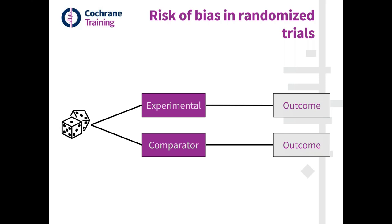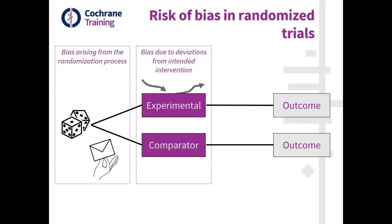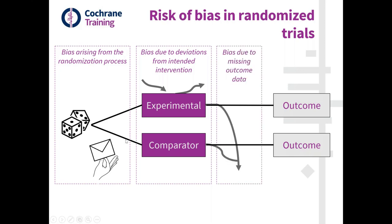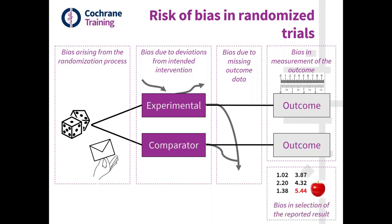When doing a risk of bias assessment, we look at particular features that can be implemented to minimise bias at each stage. These stages and domains include: the process of randomising participants into intervention groups; during the trial, whether there were deviations from the planned interventions, which should not be a problem if everyone is unaware of intervention assignments — for example, in the presence of blinding. Also covered is the possibility that participants drop out or do not have outcome data measured, the way outcomes are actually measured, and finally the reporting or cherry-picking of results.